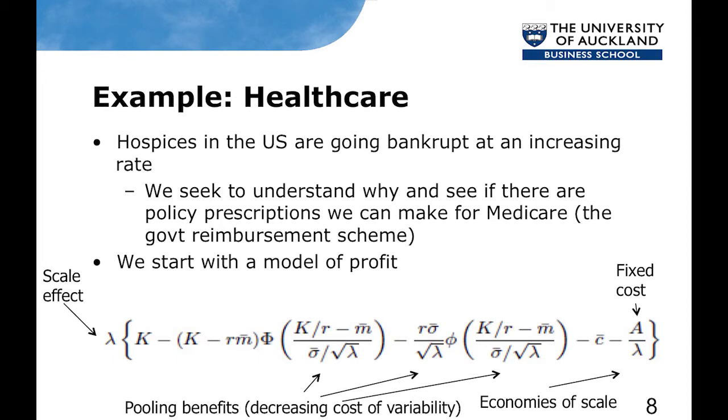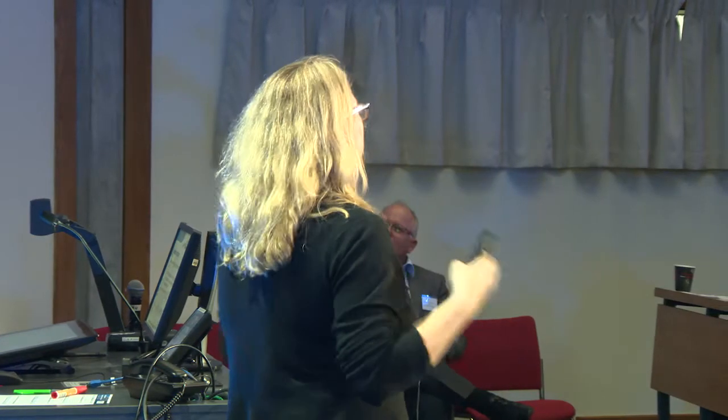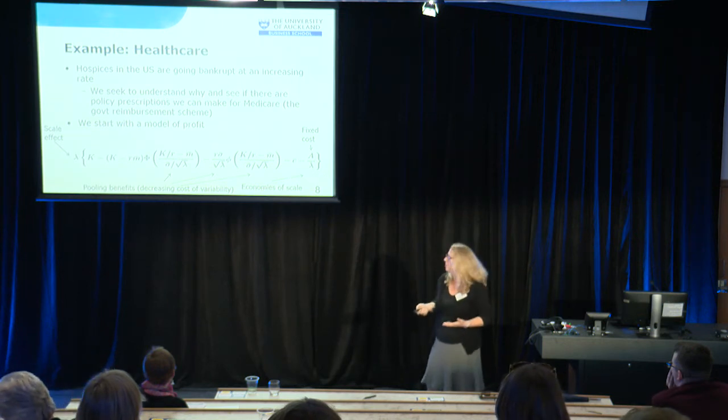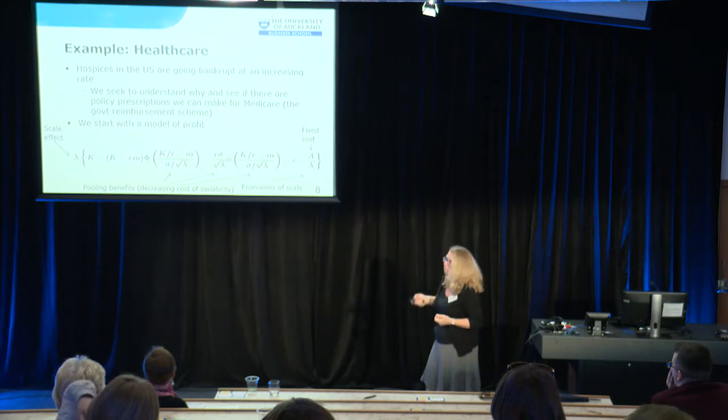I want to give a few examples to make this more concrete — because when I say mathematical modelling, what do I even mean? I have one of my equations here to show what a mathematical model looks like. This is a stochastic model because it has a normal distribution in it. The application is what really interests me: in this particular example we were thinking about hospices in the U.S. There were a lot of anecdotes about bad behaviour by hospice managers based on how they get reimbursed by the U.S. government through Medicare, which is their seniors' medical reimbursement scheme. We were able to show, mathematically, that the incentives are indeed there for bad behaviour.